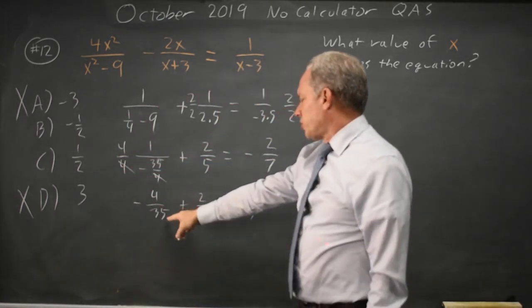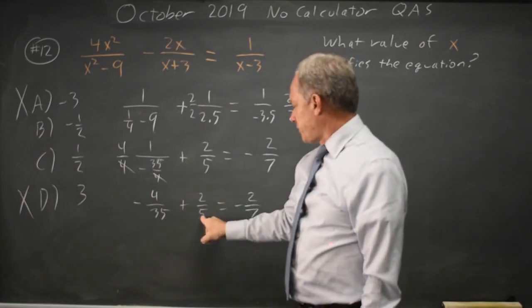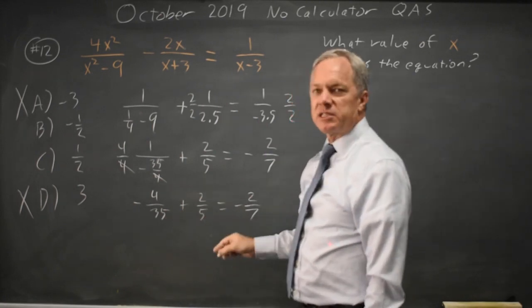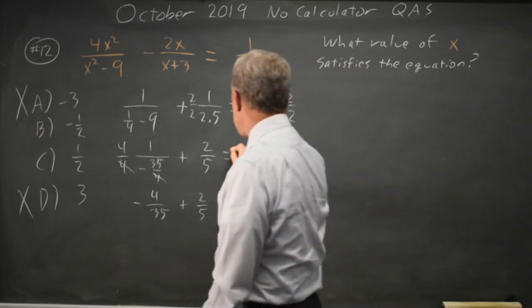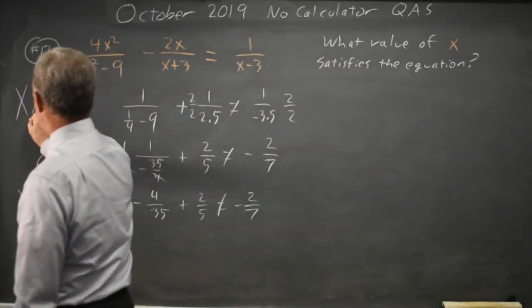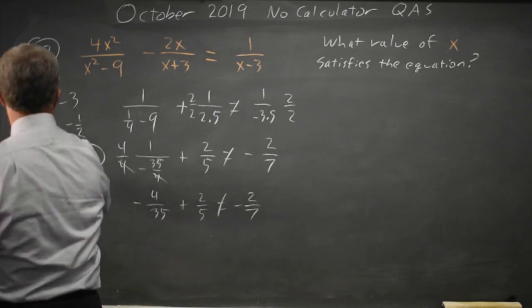Negative 4 over 35 is much smaller than 2 over 5, so the left-hand side is positive while the right-hand side is negative. This is not true. I can rule out choice B. The correct answer is C.